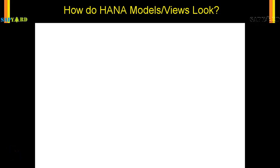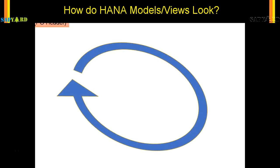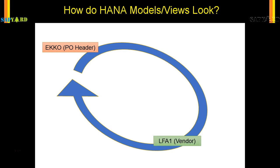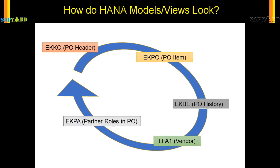You might be wondering how does an information model look like. The information model would have multiple tables joined — a PO header table, joined to the vendor table, then to the PO item table, then to the PO history table, and then to the partner roles. You want to join all these tables in a graphical format, drag and drop, link them, and when you execute them it gives you the output. This is on a high level how the information model works.